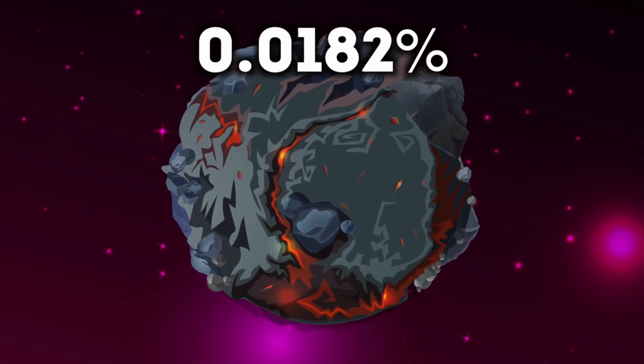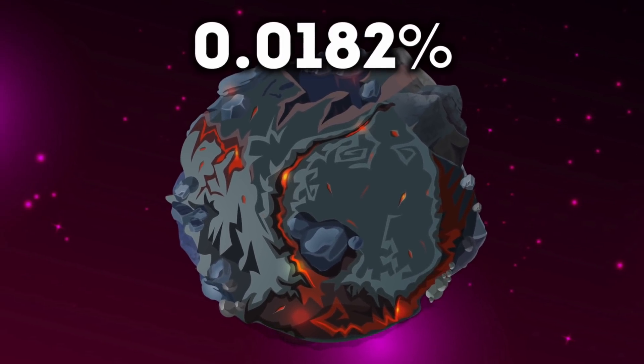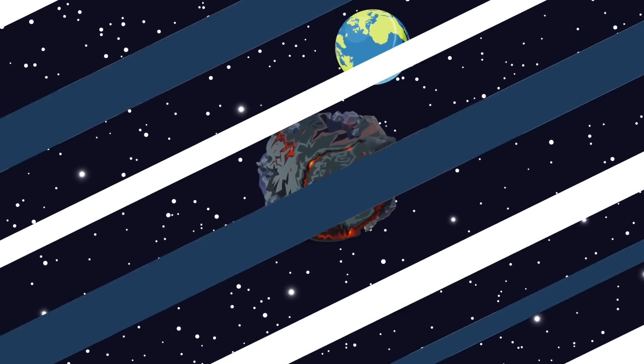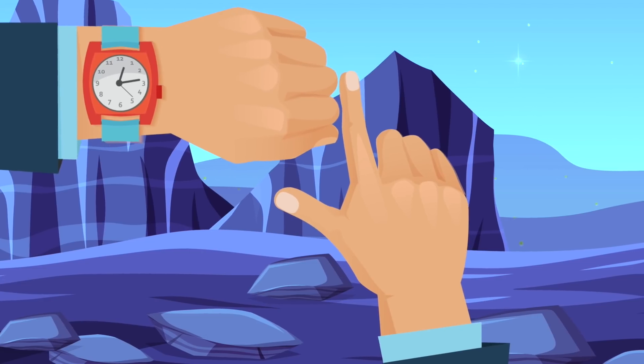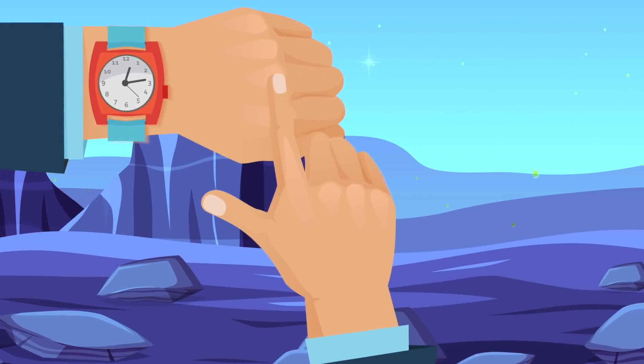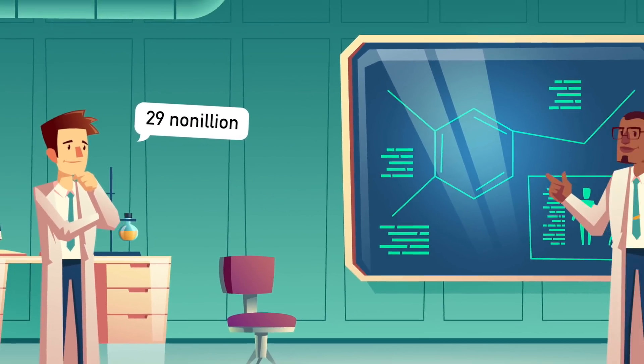This planet orbits its star once every year on Earth. That means on 55 Cancri e, time is totally different as to how we know it. What is one day for us on Earth would be one year on that planet.